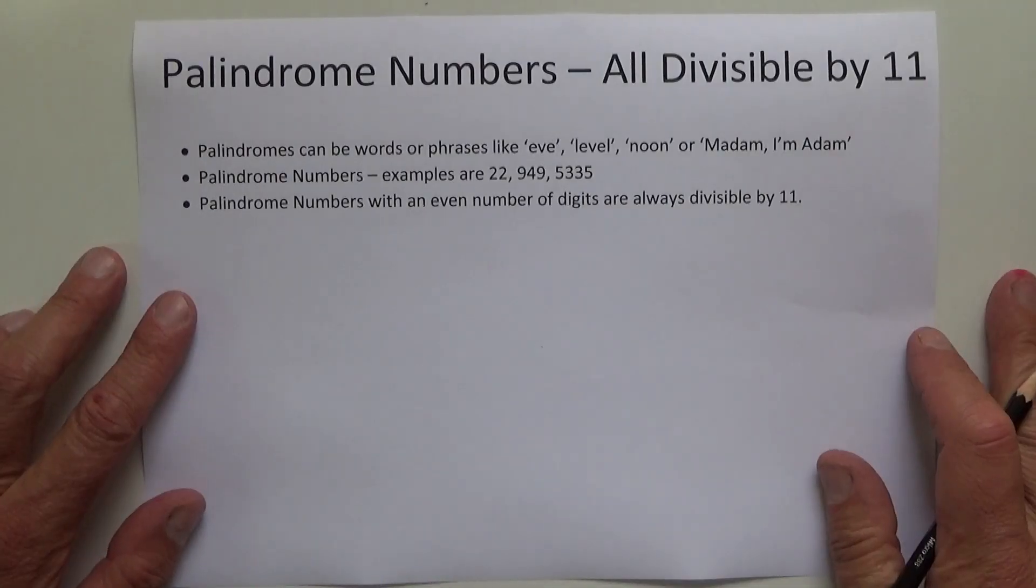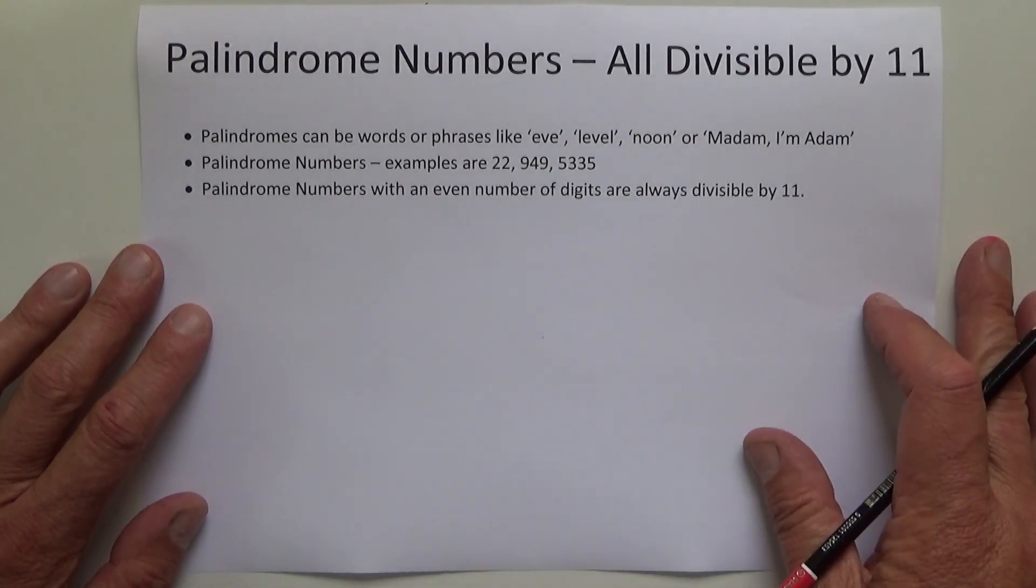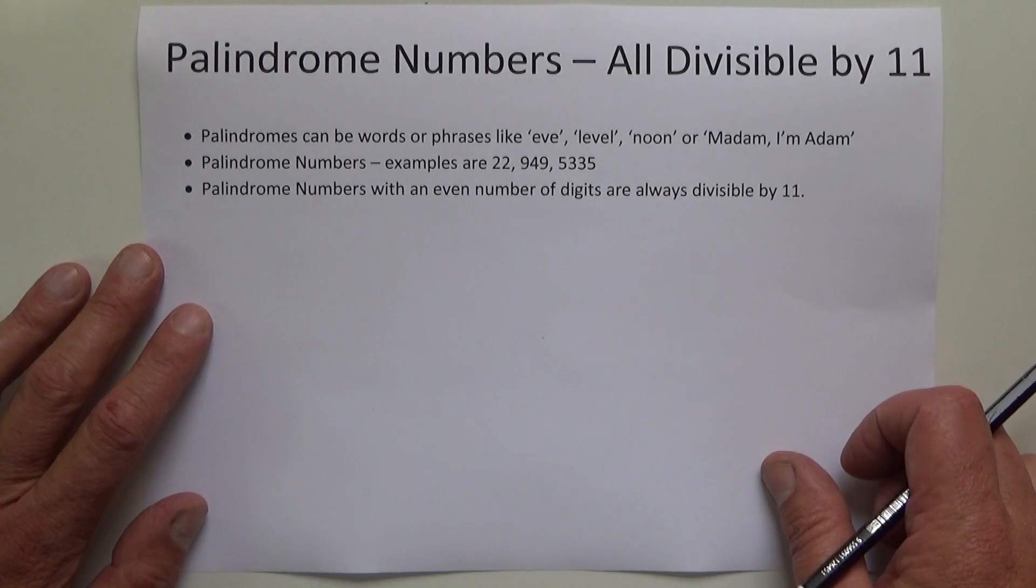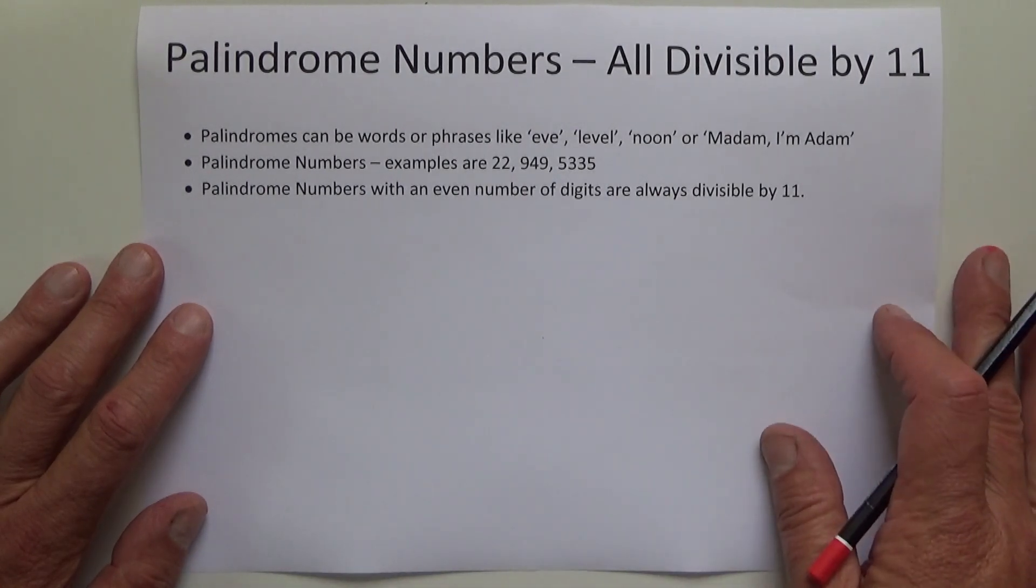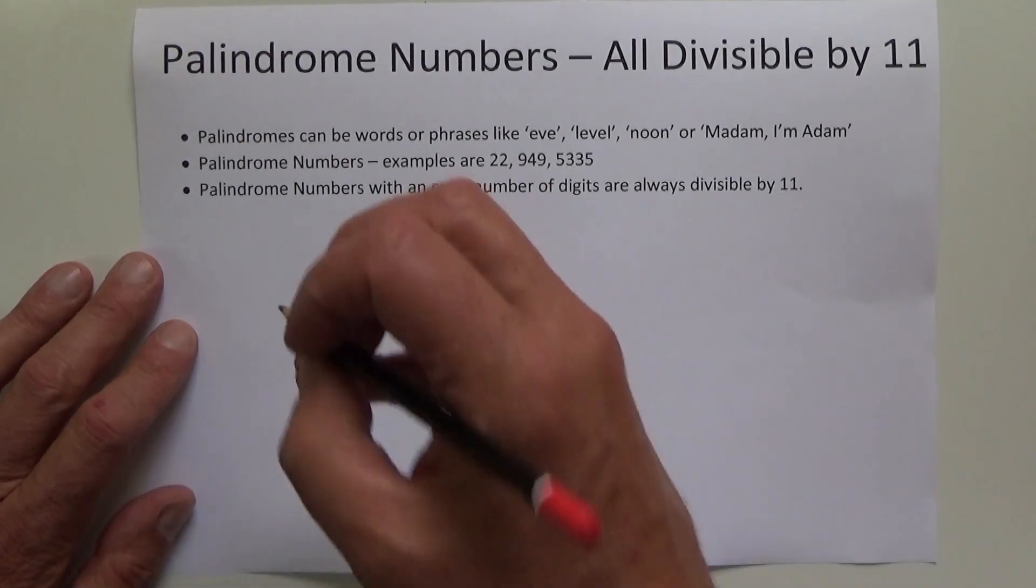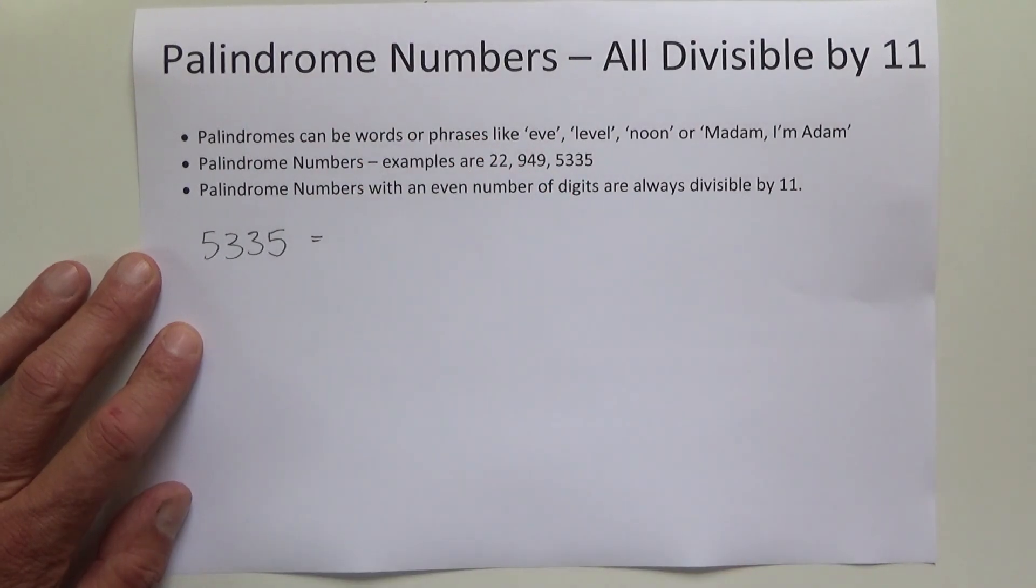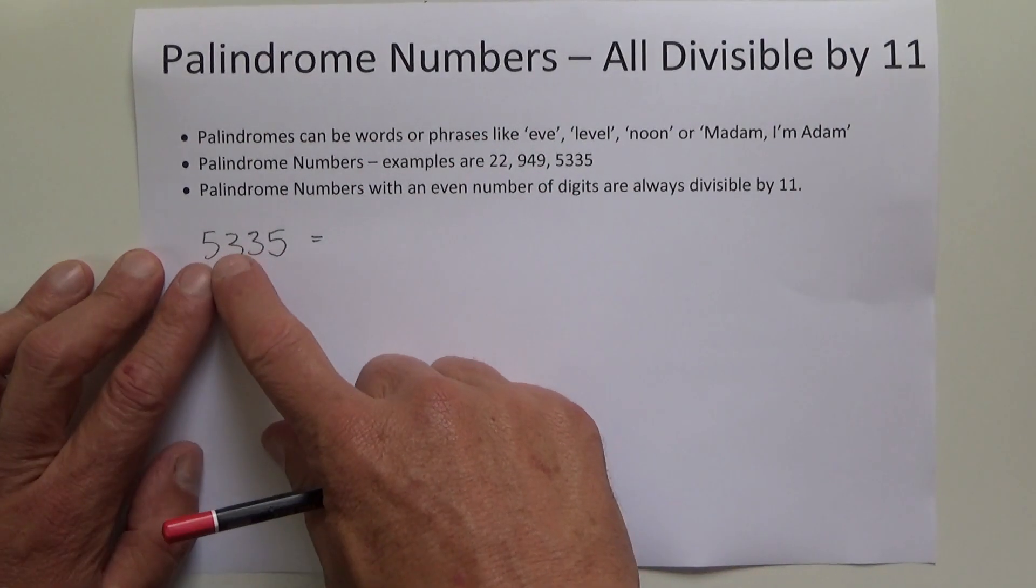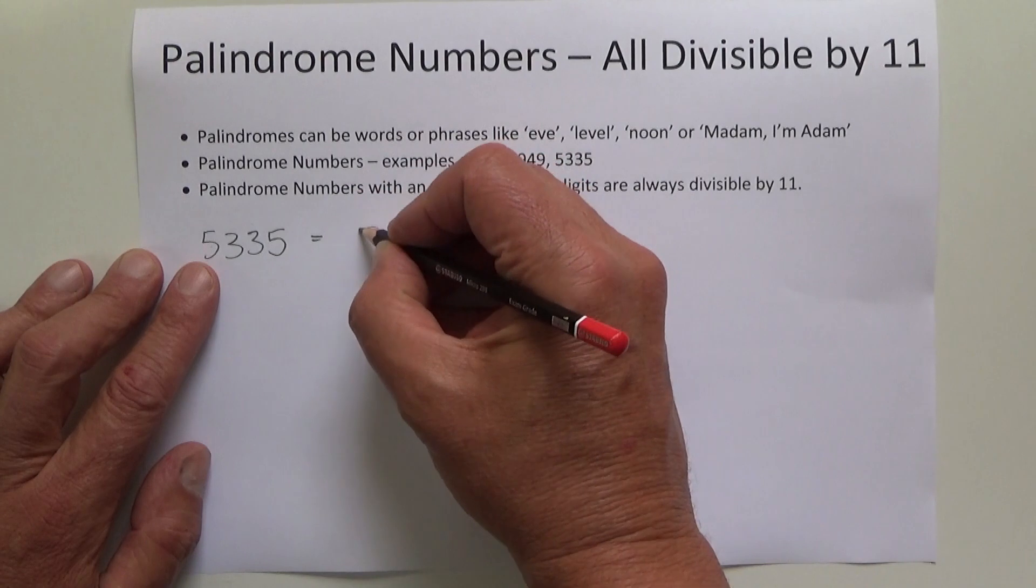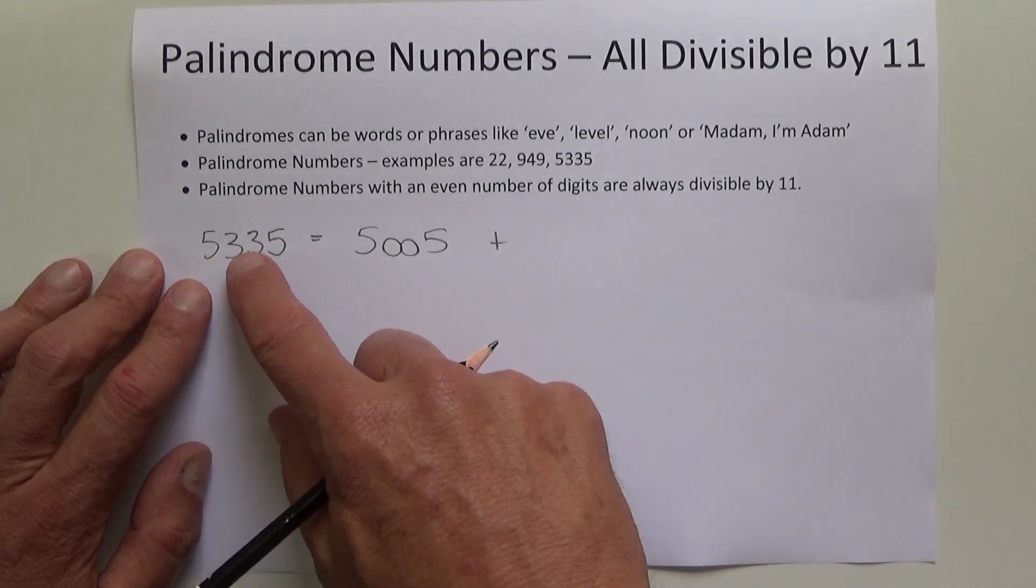Another interesting thing I discovered about palindrome numbers is that you can break them down into a number of smaller numbers, and those smaller numbers you can look at and see instantly that they are divisible evenly by 11. So we'll take this number 5335, and if you think about that, 5335 is the same as 5005 plus 330.